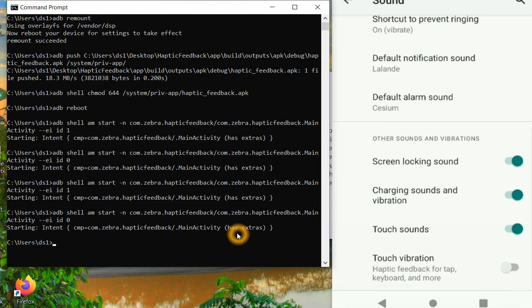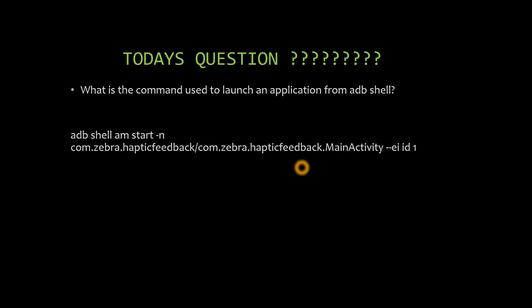Today's question: what is the command to launch an application from ADB shell? The answer is: adb shell am start -n followed by the package name, a slash, and the class name — specifically the activity you want to launch. Optionally, you can pass extra values: use --ei for integer extras, followed by the key name and the integer value such as 0 or 1. This is the complete command to start your application via ADB shell without any UI.